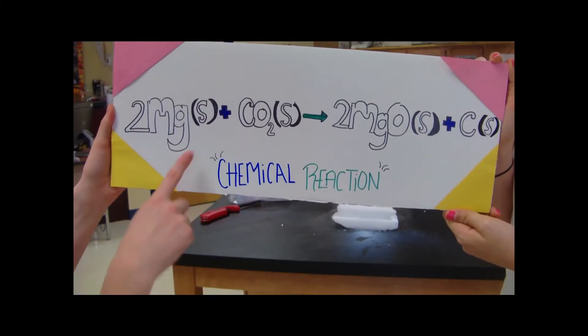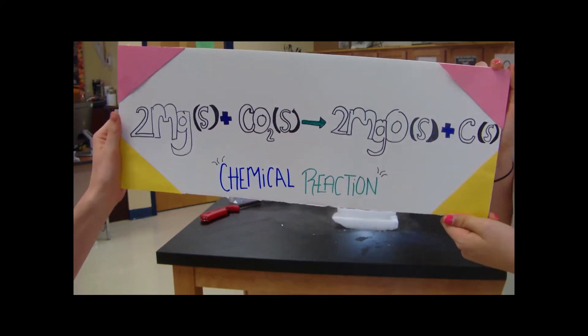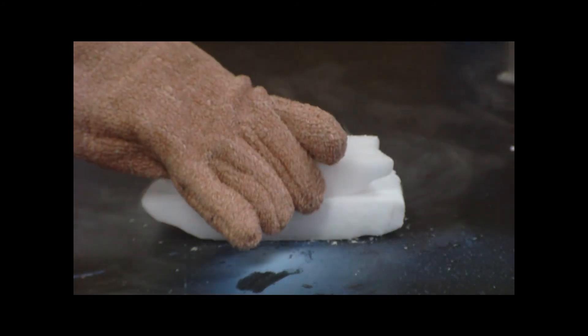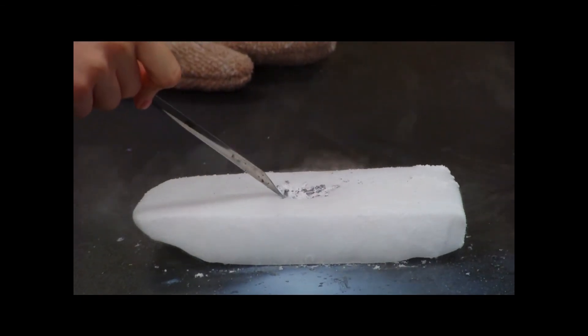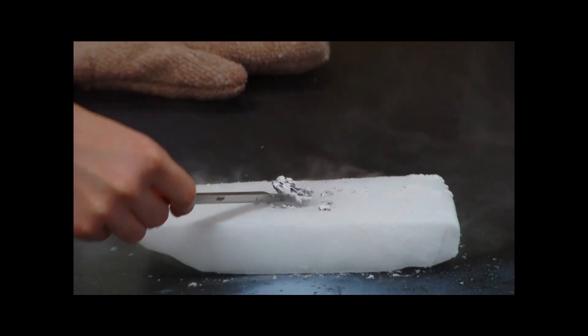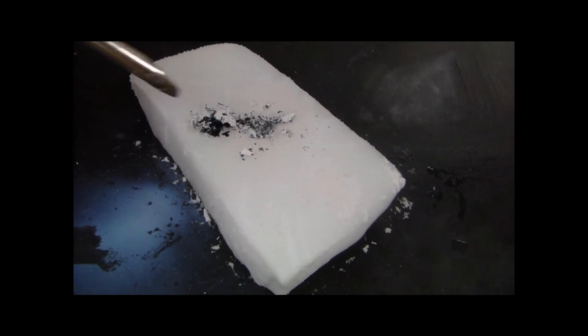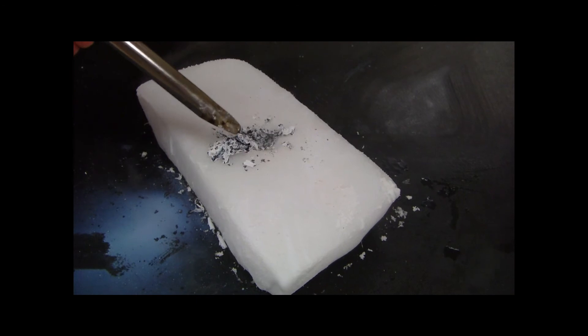Oh my gosh! The chemical reaction between magnesium and carbon dioxide gives off the product magnesium oxide and carbon. We are going to see the carbon inside the carved area of the dry ice.